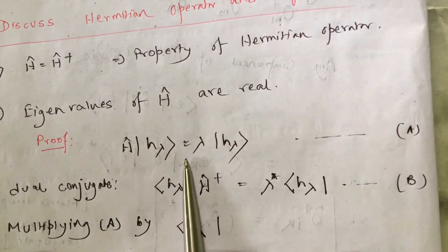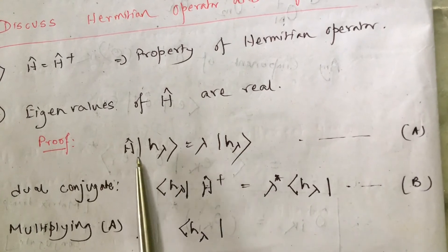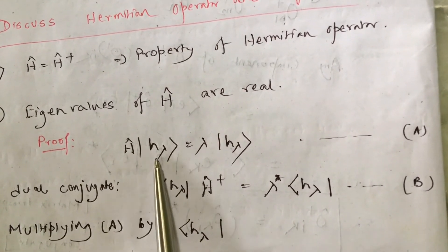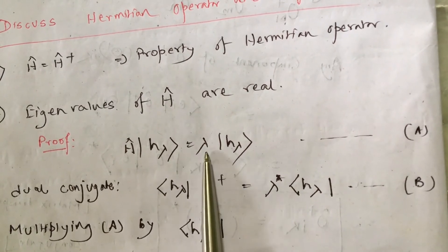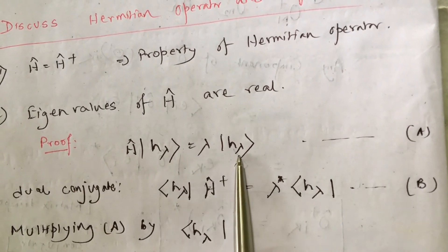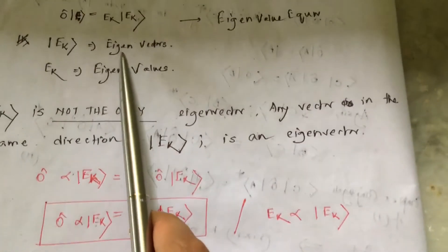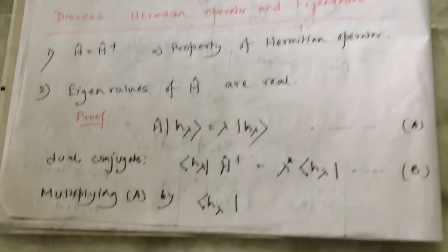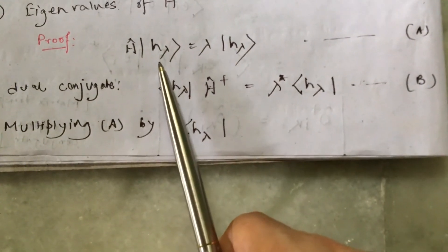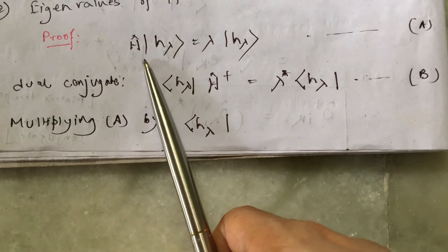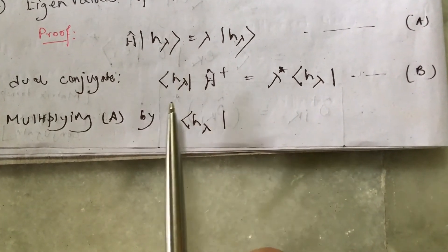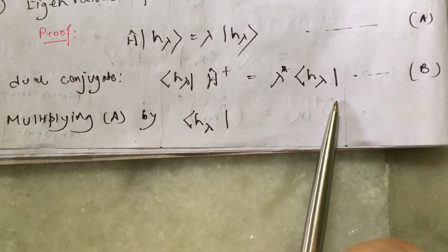Let's start with the eigenvalue equation of the Hermitian operator H. H operating on eigenstate |H_λ⟩ gives eigenvalue λ times |H_λ⟩, where |H_λ⟩ is the eigenvector. This is equation A. The dual conjugation of equation A gives equation B.